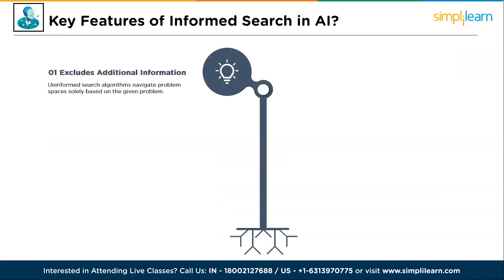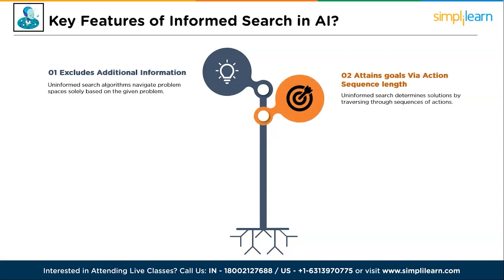The first feature is: excludes additional information. Uninformed search algorithms navigate problem space solely based on the given problem structure, disregarding any external information or heuristic guidance that might aid in efficient exploration. The second feature is: attains goal via action sequence length and order. Uninformed search determines solution by traversing through sequences of actions without considering their individual merits, focusing instead on the order and length of actions taken.